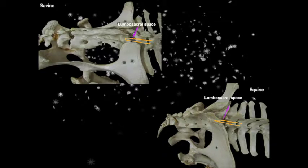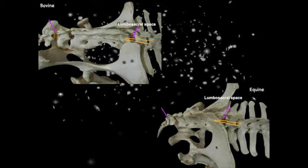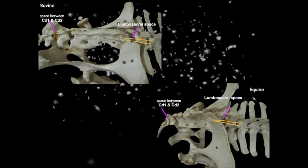The lumbosacral space is commonly used for C-sections in small ruminants and pigs, and also for high limb surgeries because it immobilizes the limb. Moving the tail, the space between the first and second caudal vertebra may be mobile — this is used for caudal epidural in cases of obstetric manipulations, prolapsed uterus, or surgery on the caudal perineal structures when we don't want to affect the limbs. In the bovine, we might also use the S5-caudal 1 space.